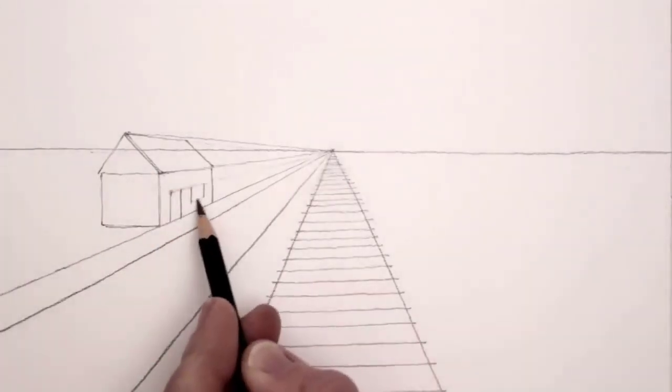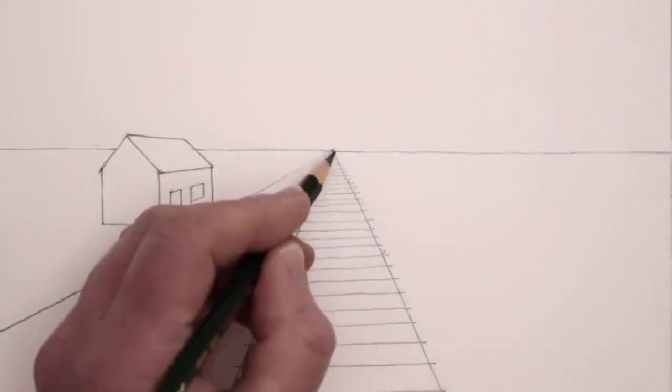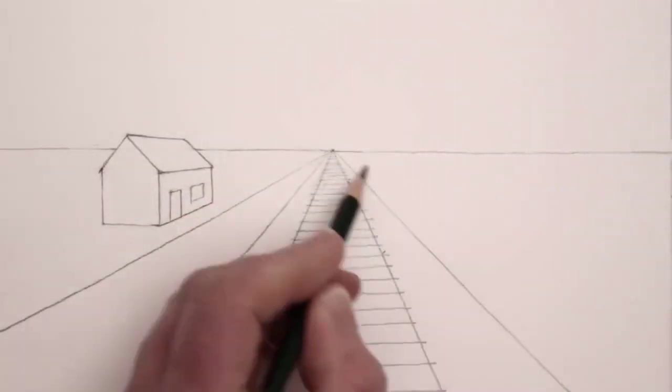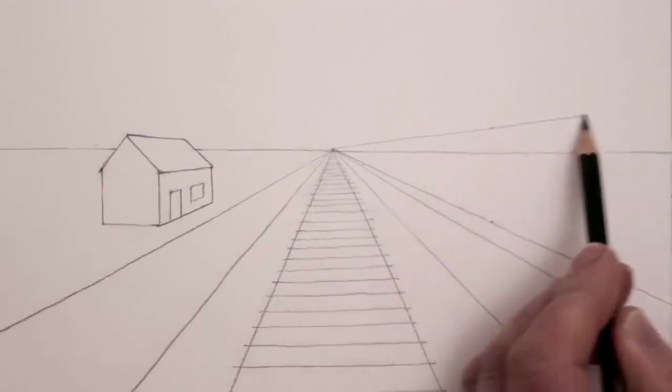Sure, things in the distance look smaller. Perspective! Yeah, but can you tell me exactly how much smaller? Can you draw me an accurate diagram? Do you know an equation? Better yet, can you tell me why?